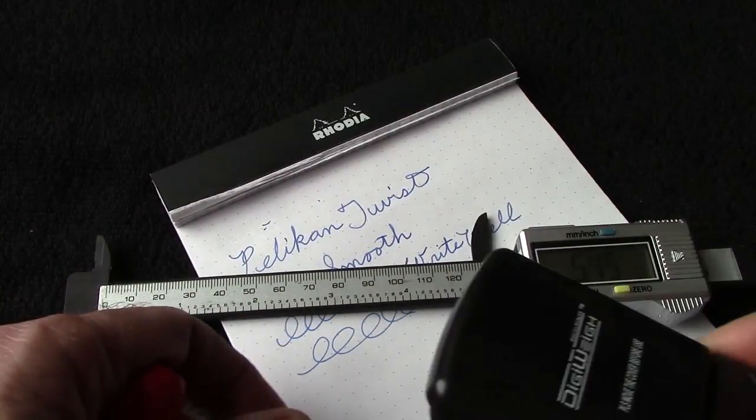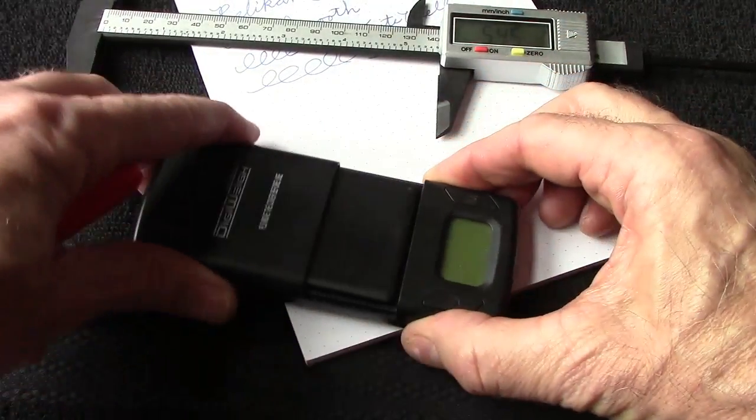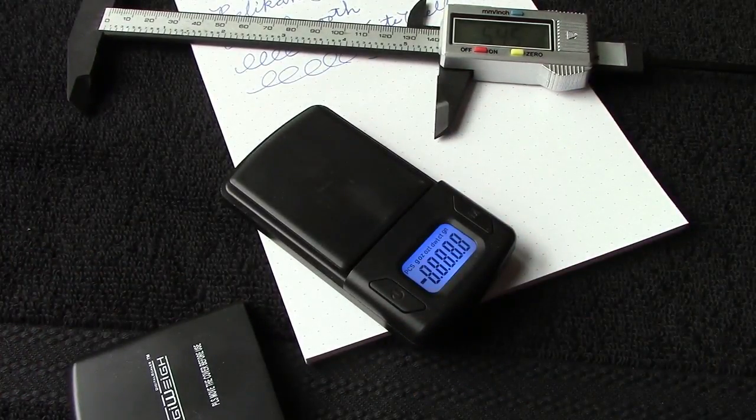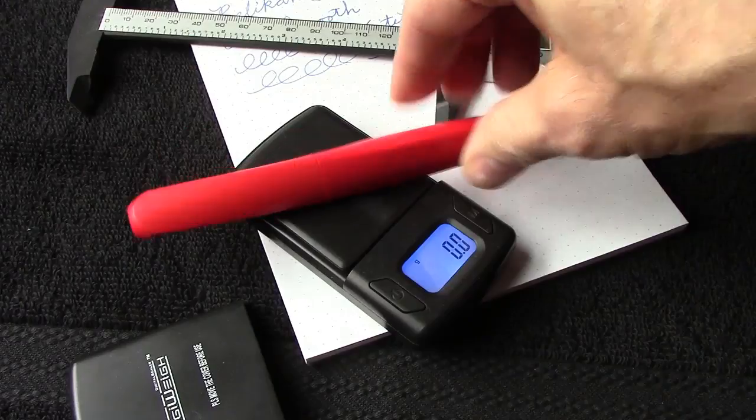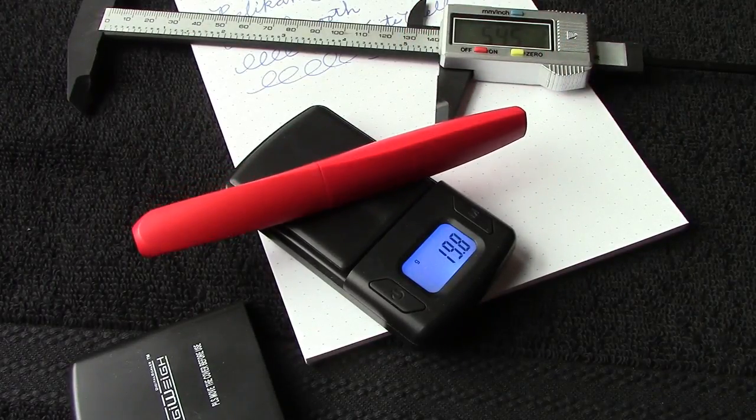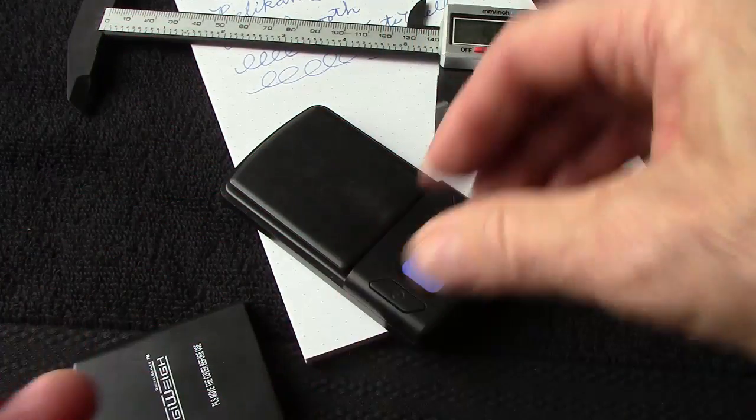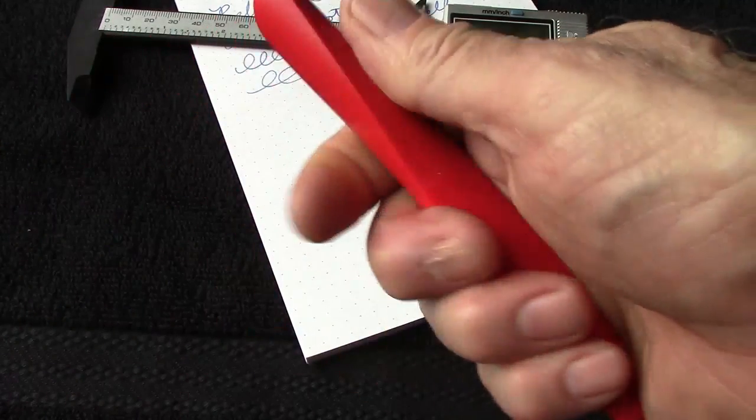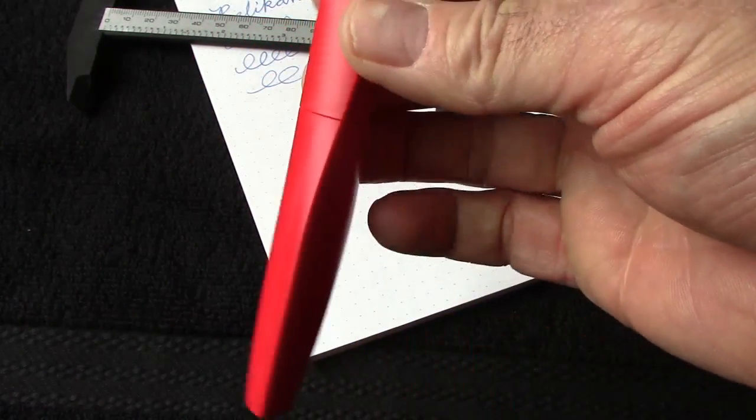If we bring out the scales, we'll turn them on, let them reset, and we'll place it on the scale. And it comes out at about 19.8 grams, which is a medium weight pen. It's certainly not extremely light. It has some heft to it, which I think is the quality of the plastic that they've made the pen out of.